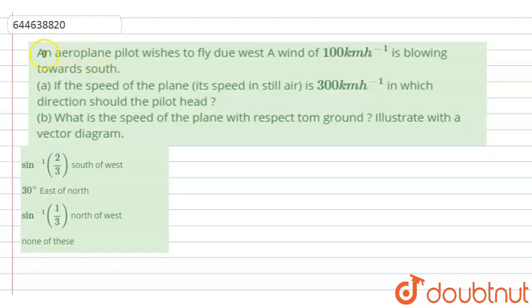The given question is an aeroplane pilot wishes to fly due west. A wind of 100 kmph is blowing towards south. So in part A, if the speed of the plane in still air is 300 kmph, in which direction should the pilot head? In part B, what is the speed of the plane with respect to ground? Illustrate with a vector diagram. And these are the given options.